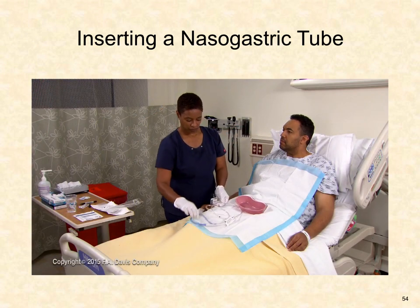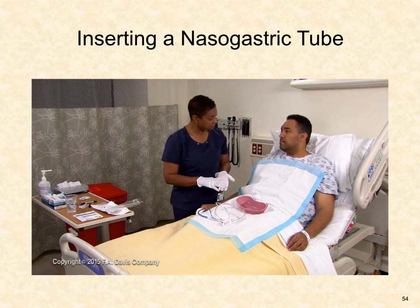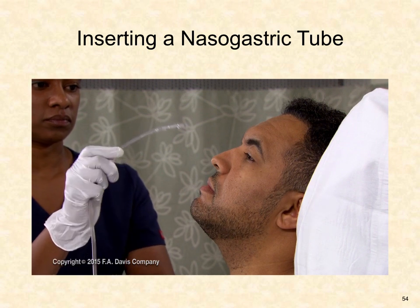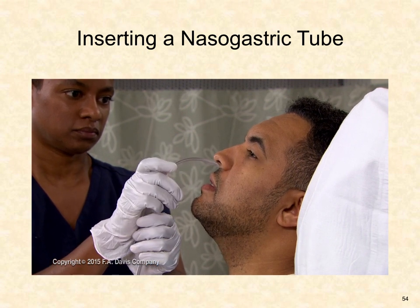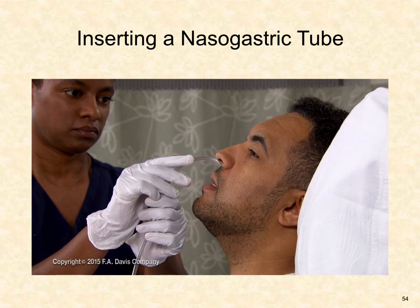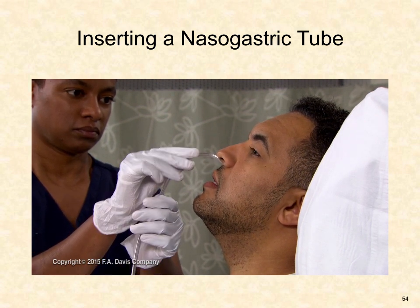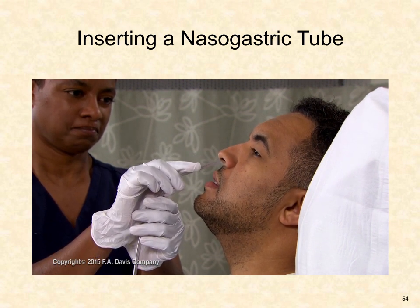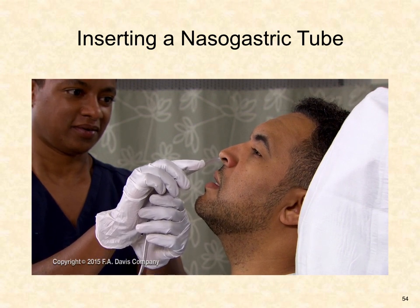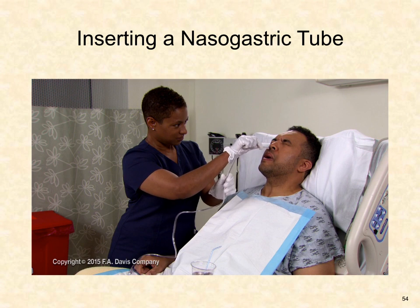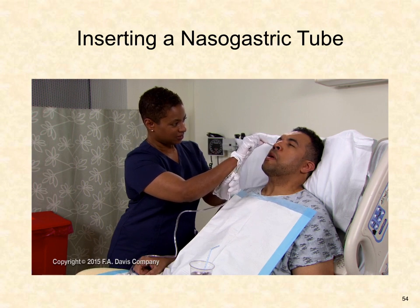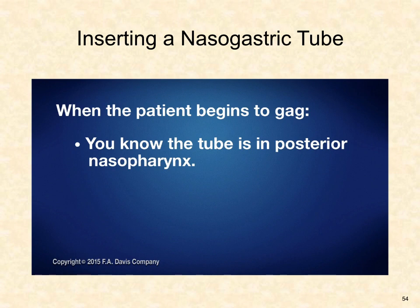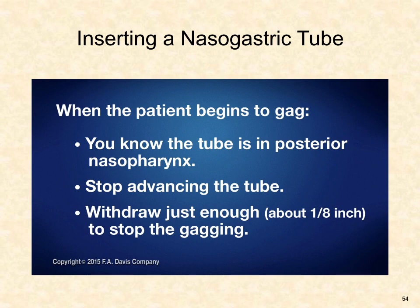Repeat instructions for the patient and ask if they have further questions. Have the patient hyperextend the neck. Insert the tube through the patient's nares, slowly advancing downward into the nasopharynx. Gentle rotation or changing the angle typically overcomes slight resistance. Never force the tube if there is more than the slightest resistance, as this can cause serious damage to the nasal mucosa. If resistance is met, remove the tube, re-lubricate, and attempt insertion in the opposite naris. When the patient begins to gag, the tube is in the posterior nasopharynx—stop and withdraw it a very short distance, about one-eighth of an inch, just enough to stop the gagging.